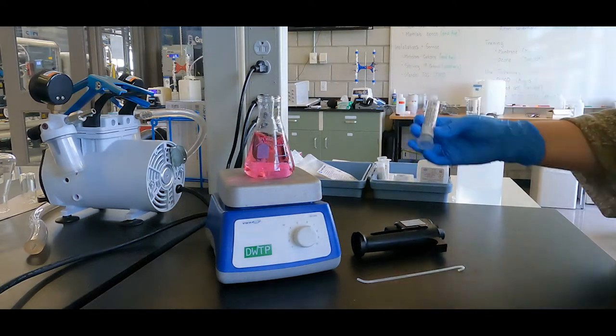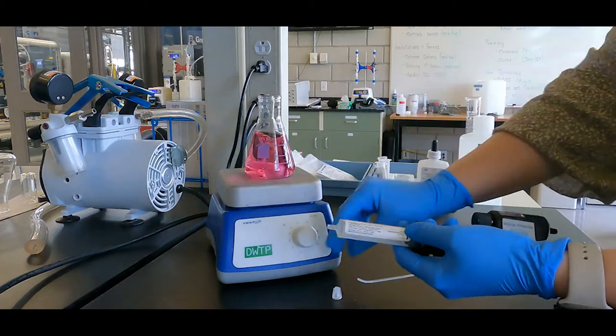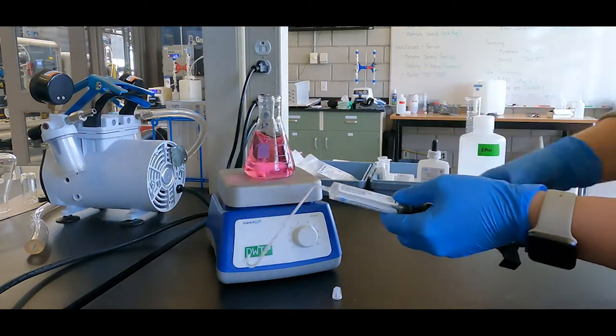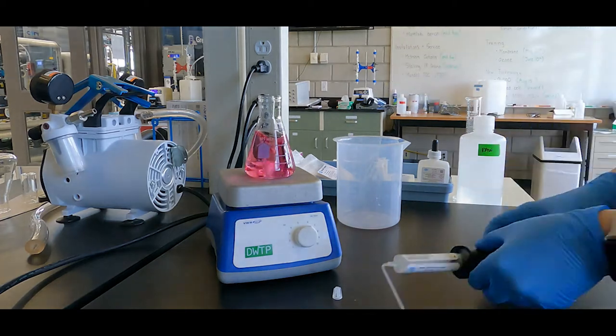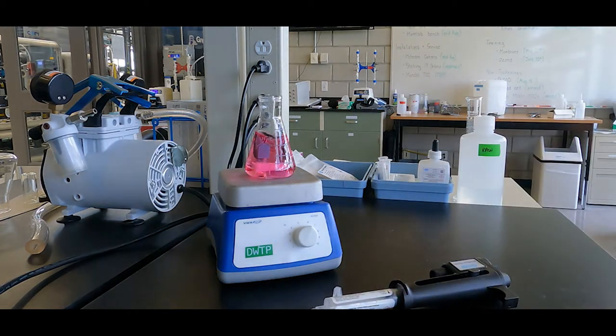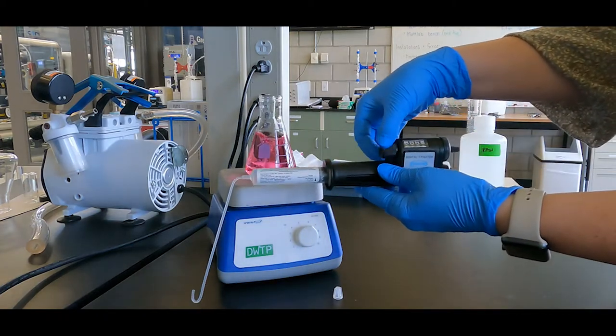Assemble the digital titrator following the instructions provided. To prime the delivery tube, hold the titrator tip up and eject the air and a few drops of the titrant out into a waste beaker. Reset the counter to zero and clean the tip.